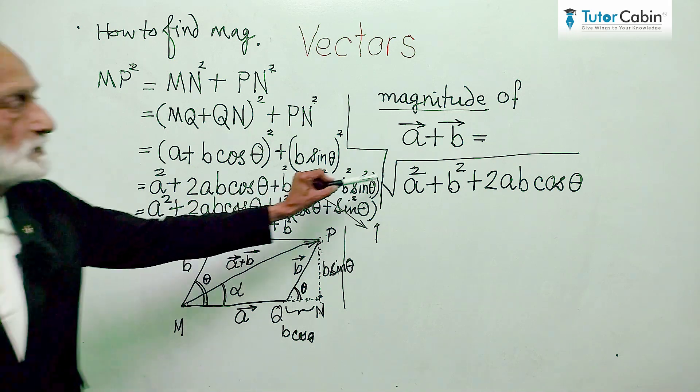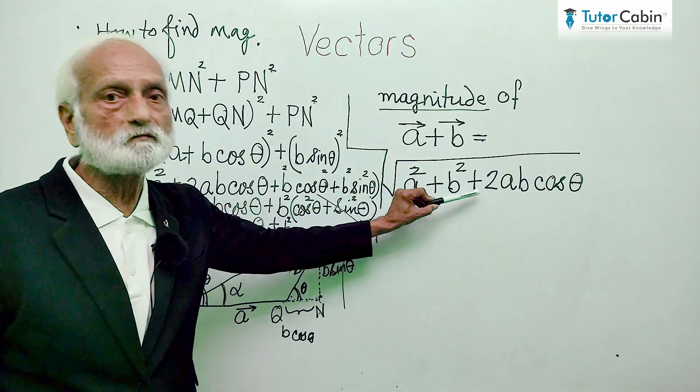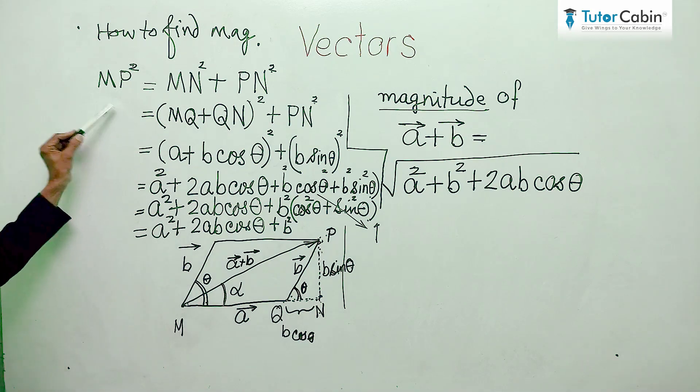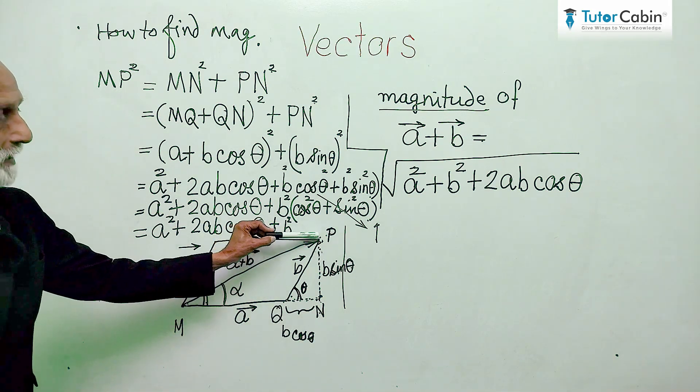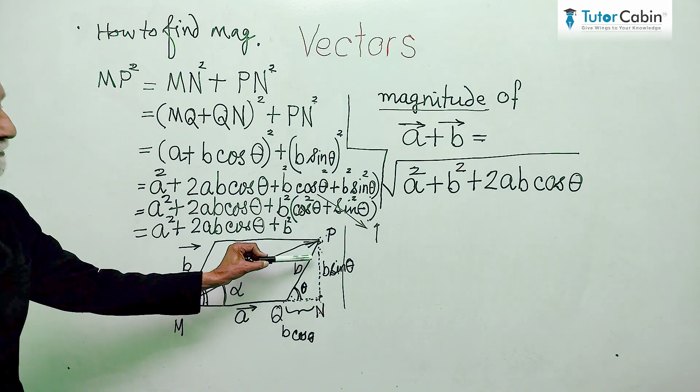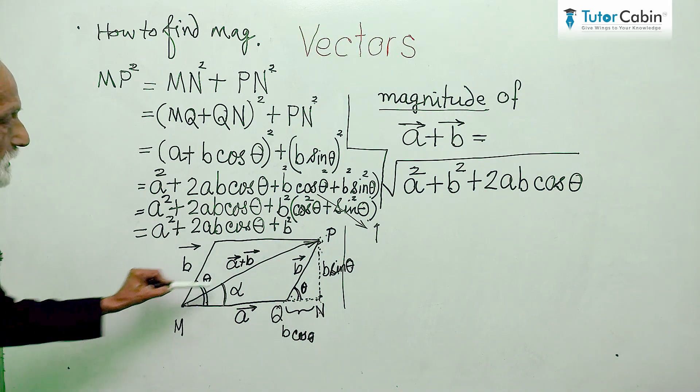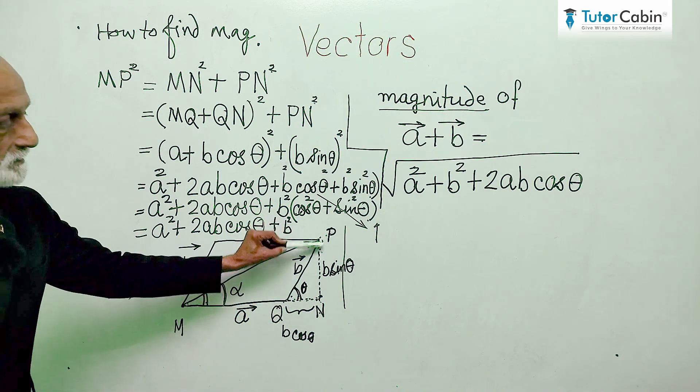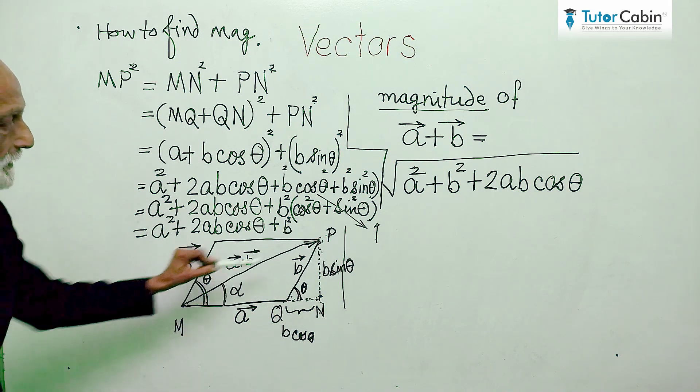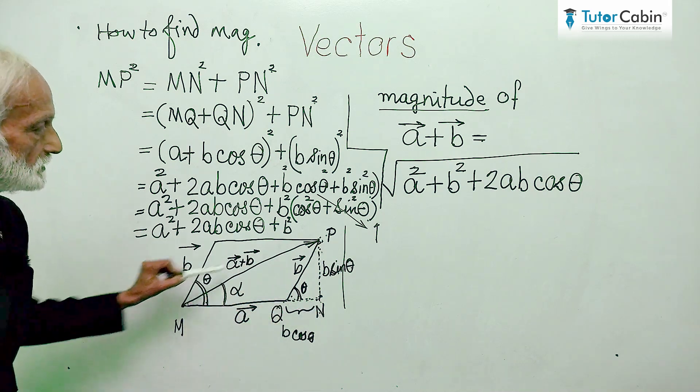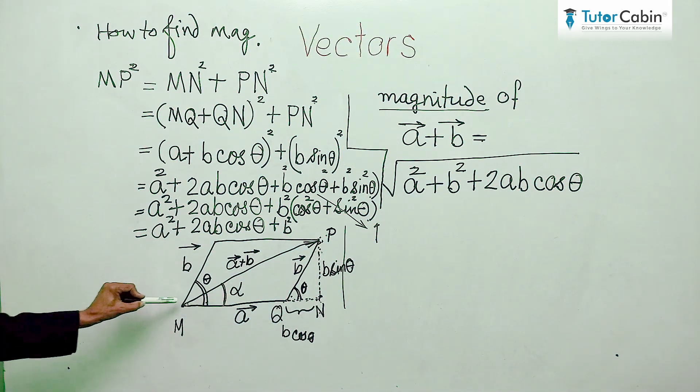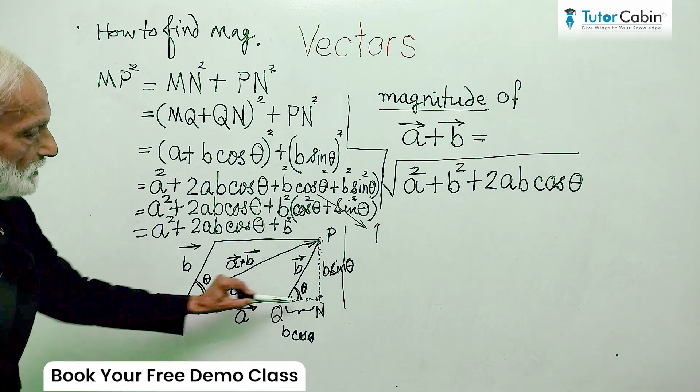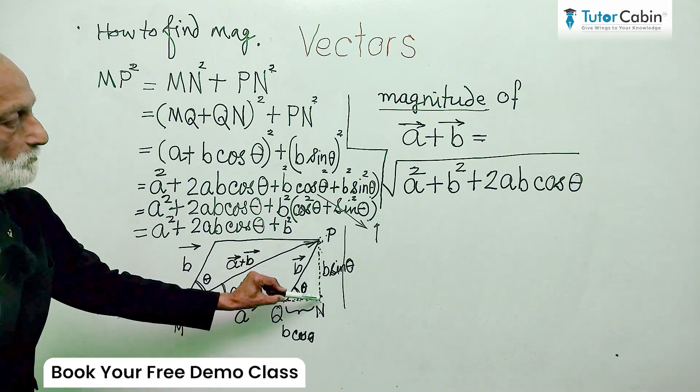So, we have given this formula. How we derive this formula, this we will see here. By Pythagoras theorem, we know that MP square - this is a right angle triangle. In this right angle triangle MPN, MP square is equal to MN square plus PN square.